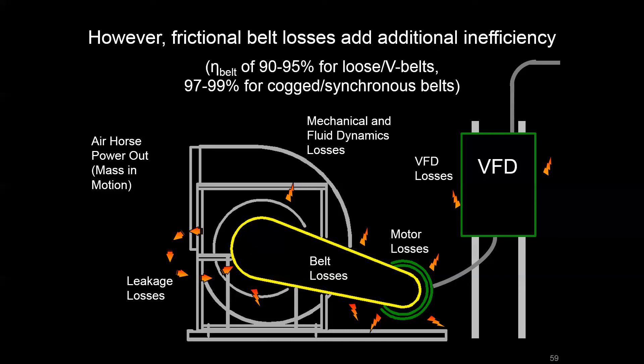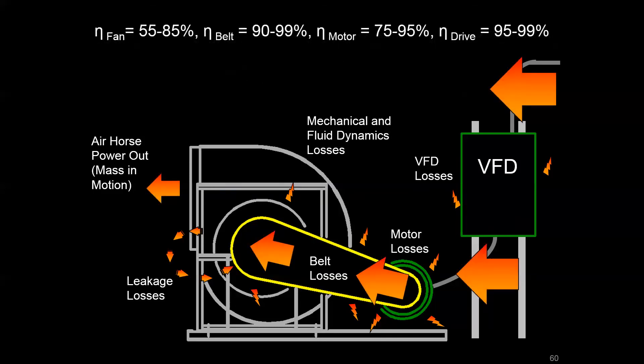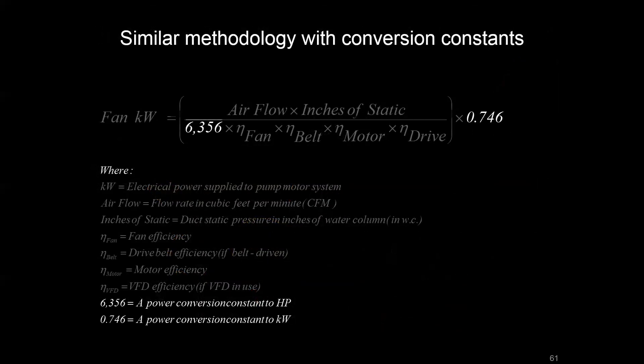So it can vary, it depends on how tight that belt is on your pulleys—the tighter, the less friction you're going to have—depends on the belt type. If it's a V-belt versus if it's a cog or synchronous belt, those are going to be slightly more efficient. But all in all, you're going to have the same approach where you're trying to count all these inefficiencies, add them up, and then that would be built into your fan equation.